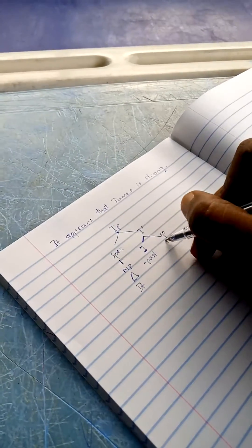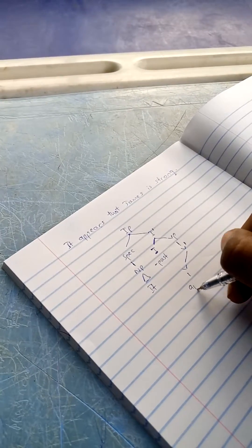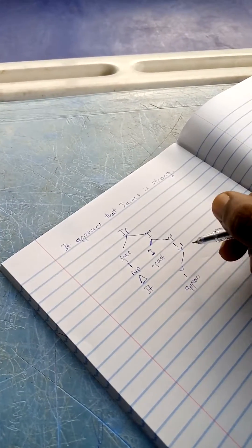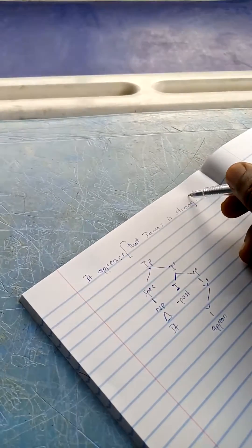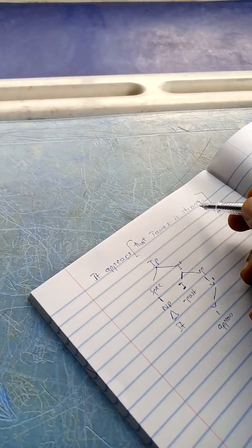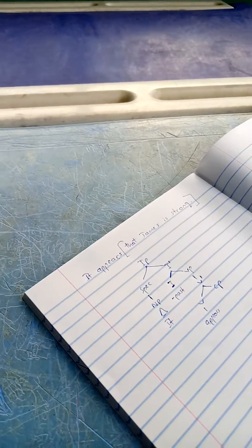The VP expands as the V-bar, and then you have the V itself, which is 'appears'. Now, 'that James is strong' is a subordinate clause. This is how we account for subordinate clauses.